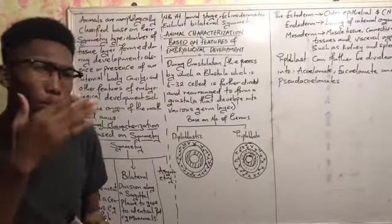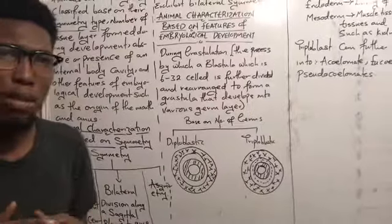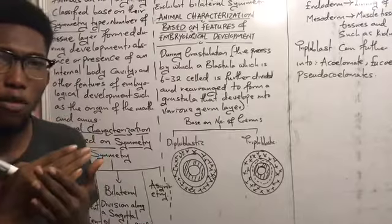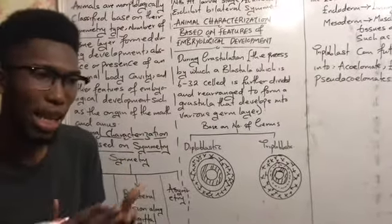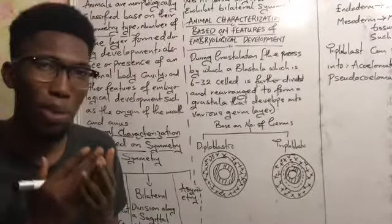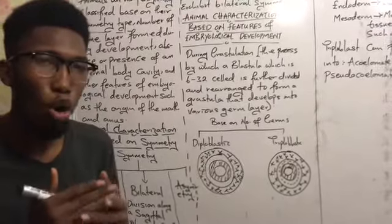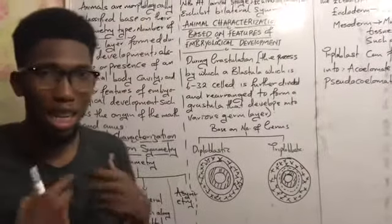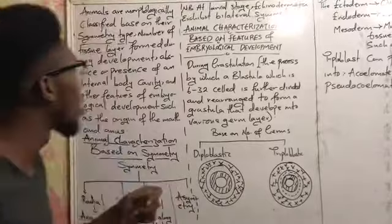That is, the axis around which the body of the organism balances — that's what we call symmetry. So that's one basis for the classification of organisms.